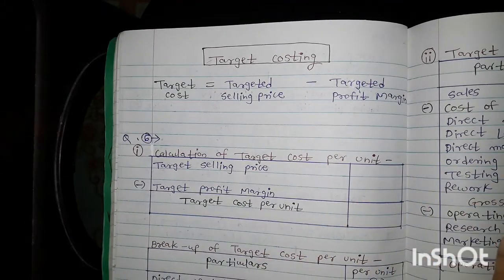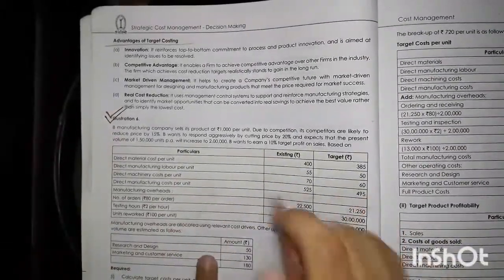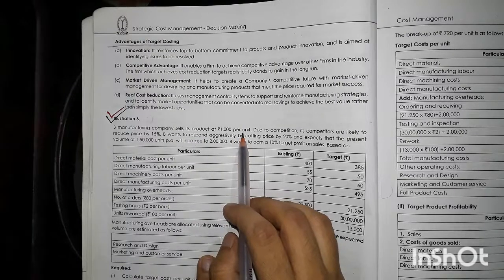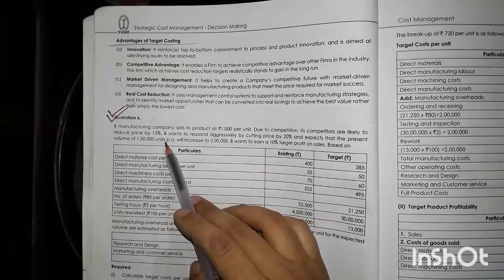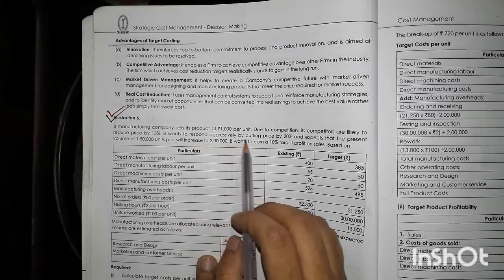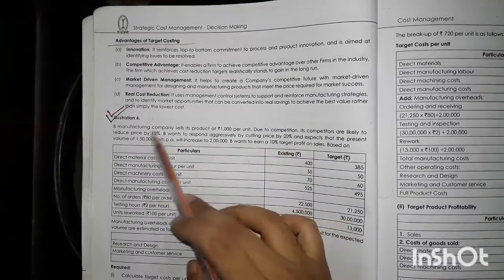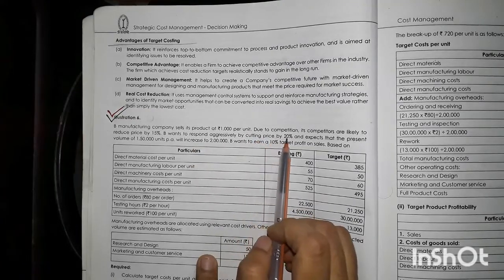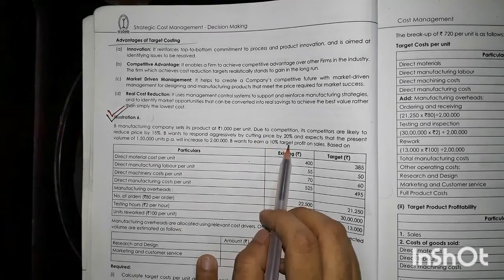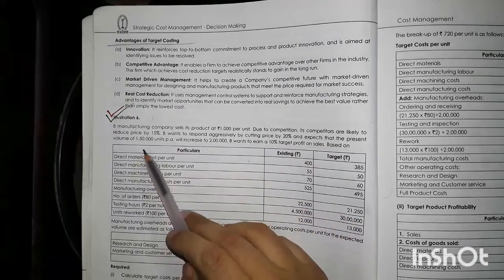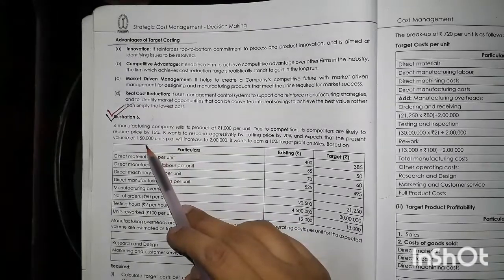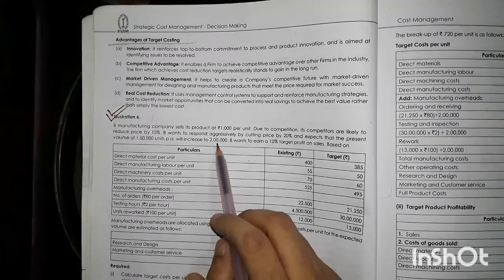Let us understand with Illustration Number 6. CB Manufacturing Company sells its product at Rs. 1000 per unit. Due to competition, its competitors are likely to reduce the price by 15%. B wants to respond aggressively by cutting price by 20%. So this B Manufacturing Company has reduced its price by 20%, while other competitors reduced by 15%. B expects that the present volume of 1,50,000 units per annum will increase to 2 lakh units.